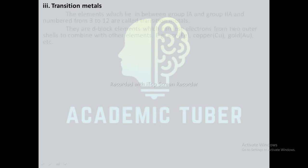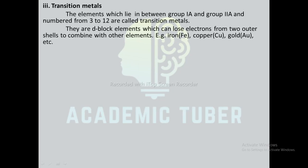Transition metals: the elements which lie between group 1A and 2A, numbered from 3 to 12, are called transition metals. They are d block elements which can lose electrons from two outer shells to combine with other elements. Examples include iron, copper, and gold.